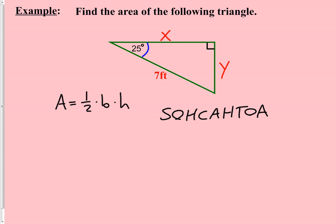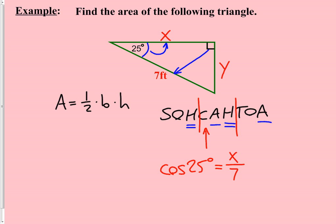We have a theta angle of 25 degrees. X is positioned directly beside the 25° angle — that makes it the adjacent side. We also know the hypotenuse is 7. The trig function that uses adjacent and hypotenuse is cosine. So: cos(25°) = x/7. To isolate x, multiply both sides by 7: x = 7 cos(25°). Taking that to the calculator in degree mode gives us x ≈ 6.34.